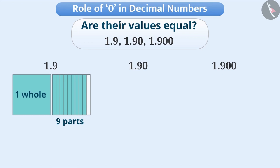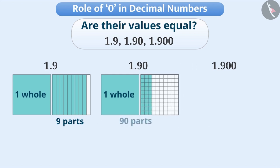Similarly, we can represent 1.90 by taking 1 whole square and taking 90 parts out of 100 equal parts of a whole.